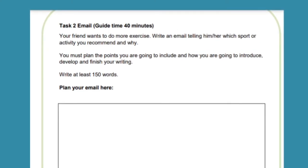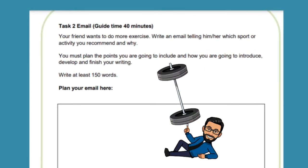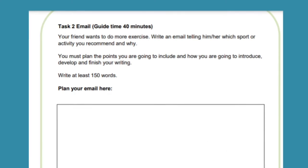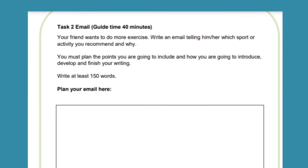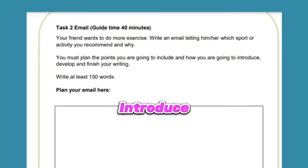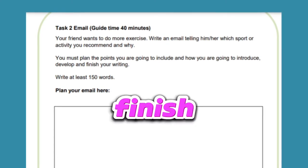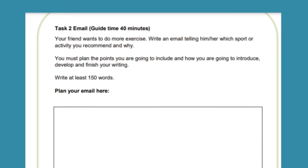In this task, your friend wants to do more exercise. Write an email telling him or her which sport or activity you recommend and why. You must plan the points you're going to include, and how you're going to introduce, develop, and finish your writing. Write at least 150 words.